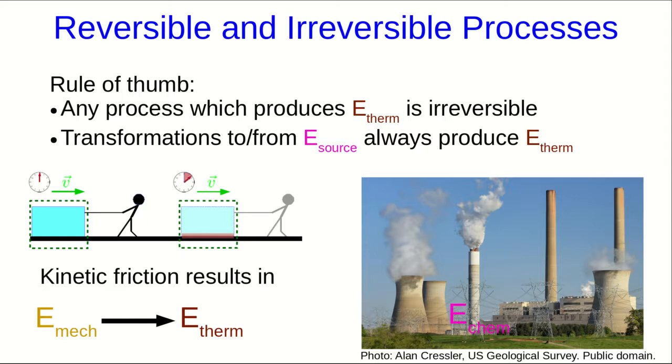So we start with chemical energy, in this case in the form of coal. The ultimate goal here is to convert that into electric potential energy. However, because this is an irreversible process, some of that chemical energy must be converted into thermal energy.